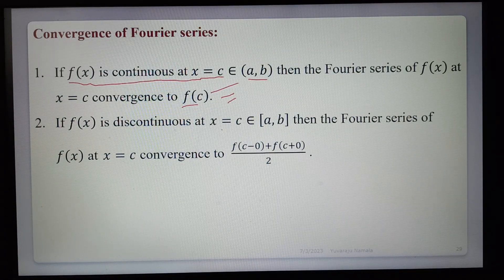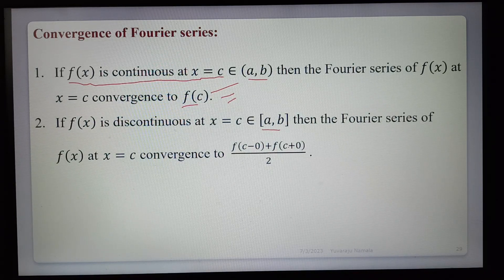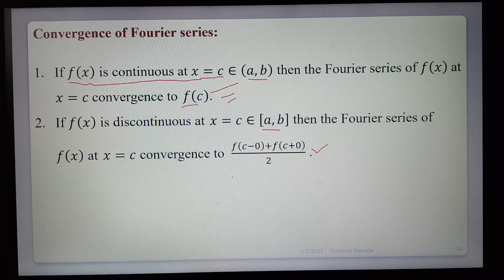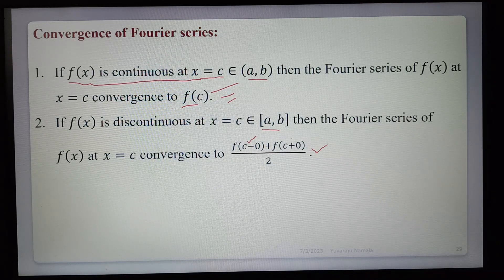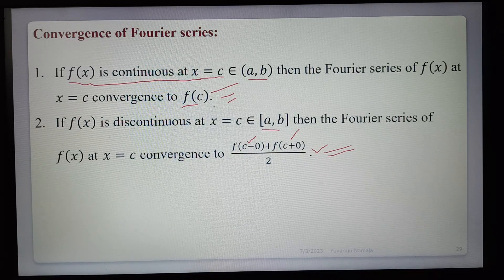If f(x) is discontinuous at a point c between a and b, then the Fourier series of f(x) at c converges to [f(c−0) + f(c+0)] / 2. That means it converges to the average of the left-hand limit f(c−0) and the right-hand limit f(c+0). When f(x) is continuous, the series equals f(c) directly; when discontinuous, it equals the average of the left and right continuity values.